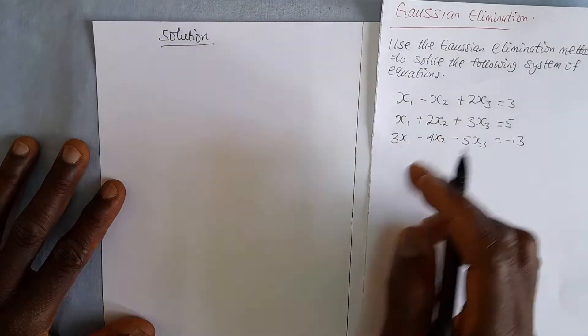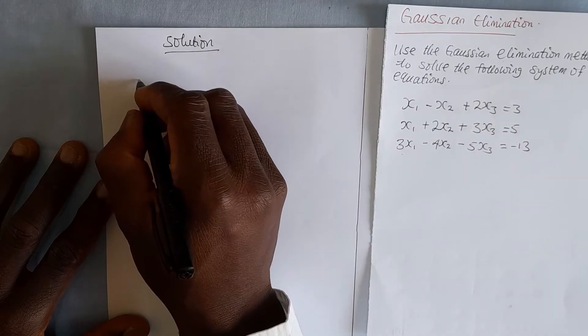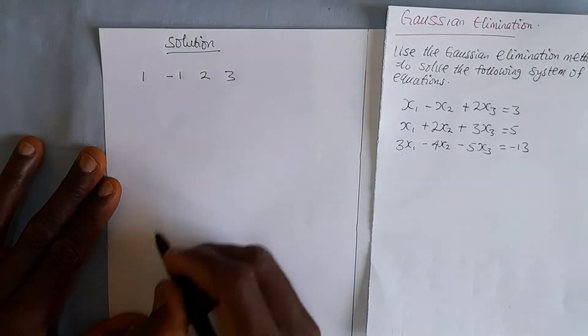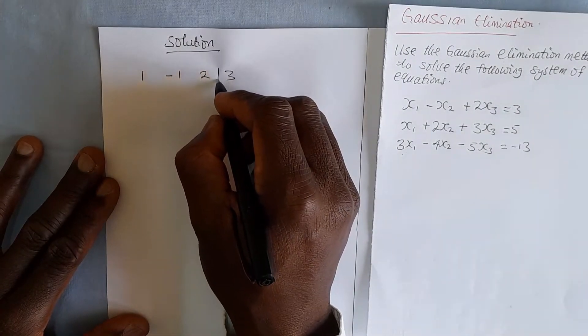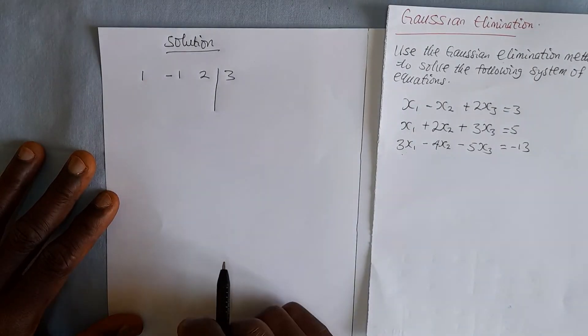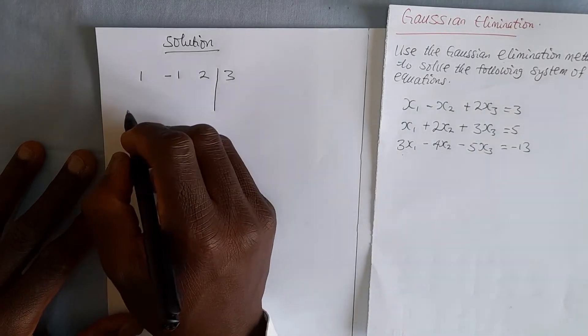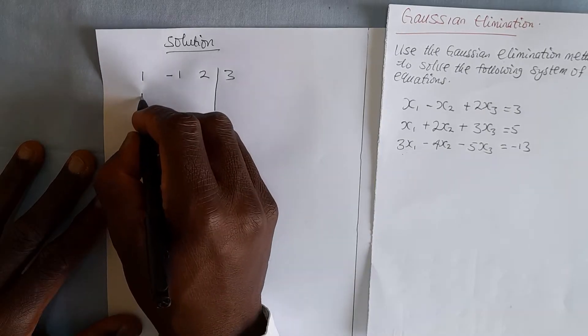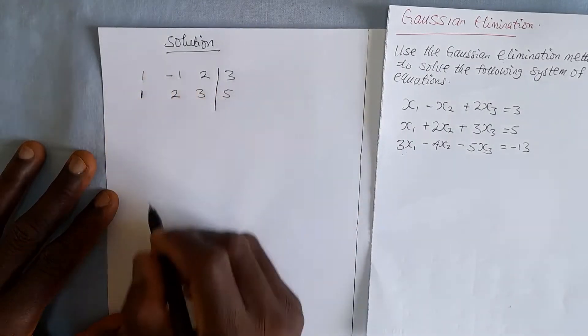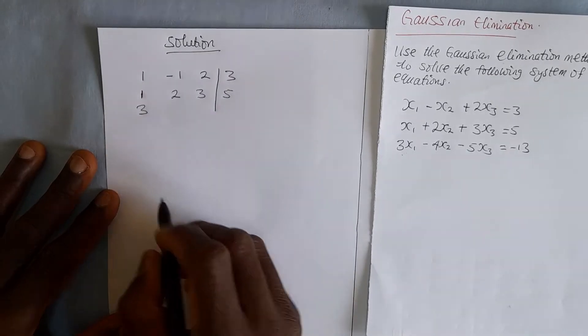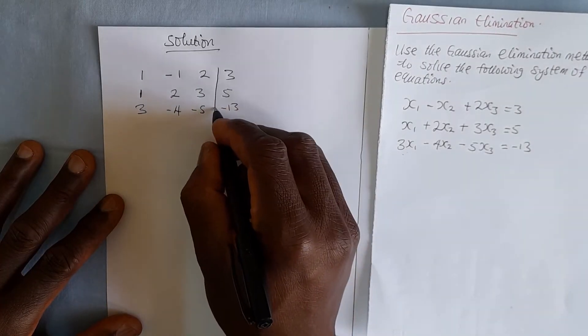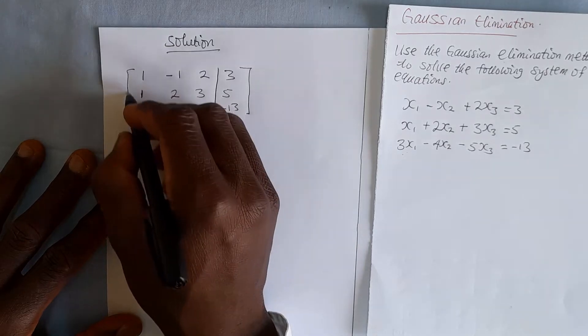For the coefficients on equation 1, we have for x1 is 1, negative 1, 2, and 3. We separate the right-hand side from the left-hand side with a vertical bar. Some will say you can use a dotted bar. Any of them can do. For equation 2, you have 1, 2, 3, and 5. And then for the third equation, you have 3, negative 4, negative 5, and negative 13. So we are done with the augmented matrix.